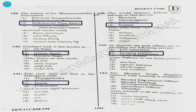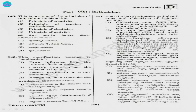Question 144. The Mandal Praja Parishad General Body Meeting is conducted by: 1) Mandal Education Officer, 2) Mandal Parishad Development Officer, 3) Agricultural Officer, 4) Tahsildar. The answer is option 2, Mandal Parishad Development Officer. Question 145. This is not one of the principles of curriculum construction: principle of creativity, principle of teacher-centeredness, principle of elasticity, principle of activity. Always it should be child-centered, not teacher-centered. So option 2, the principle of teacher-centeredness.